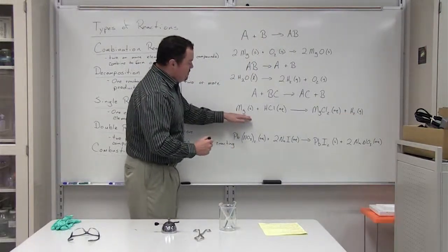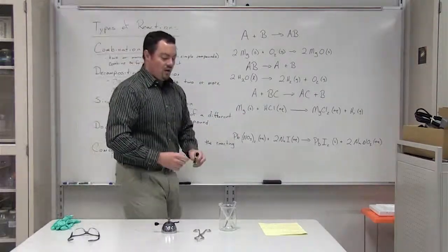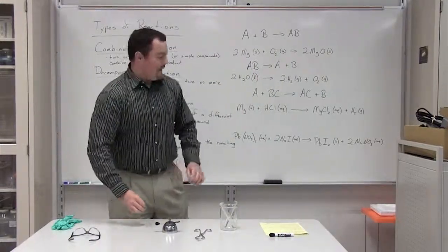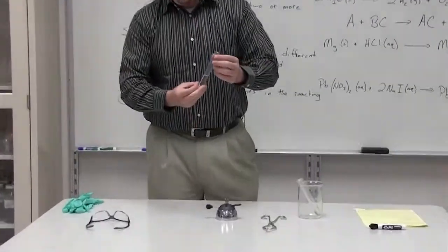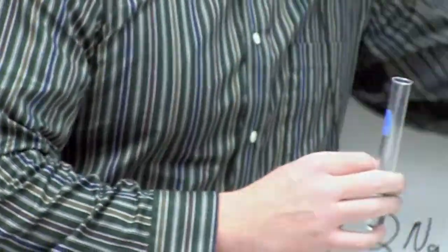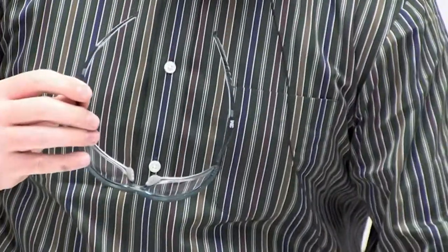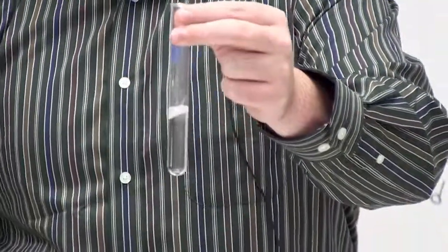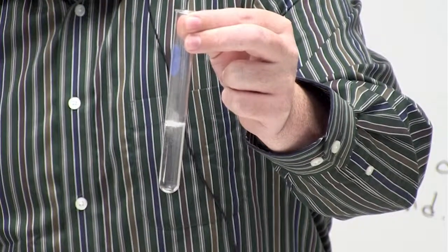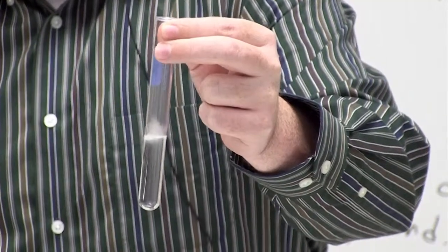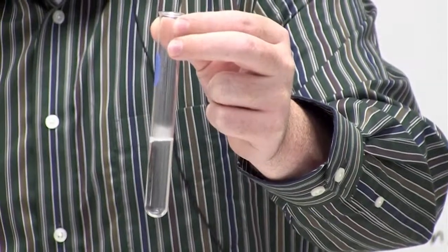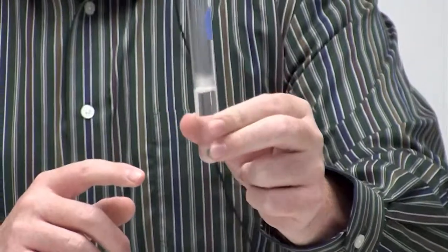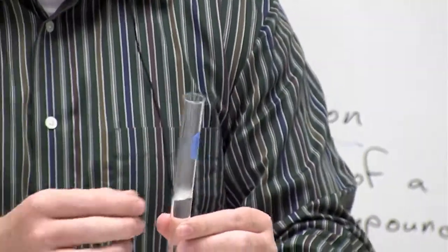The magnesium and the hydrogen are simply switching places to form a new product. Let's watch what happens whenever we mix magnesium metal and hydrochloric acid — pay attention to the reaction as well as the hydrogen gas being emitted. You can see the magnesium is now completely gone. We have a new product called magnesium chloride, which is soluble in water, and we emitted hydrogen gas from the reaction.